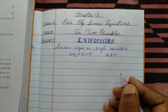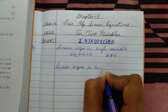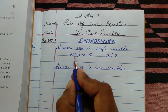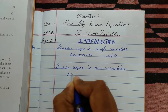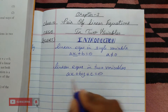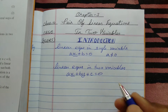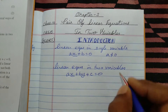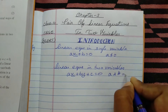Coming to linear equations in two variables — these have two variables, expressed in the form ax + by + c = 0, where x and y are the two variables, a and b are their coefficients, and c is the constant term. Here also the condition applies that a and b must not be equal to 0.